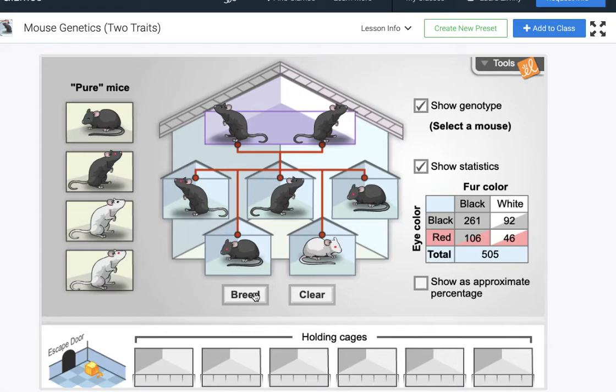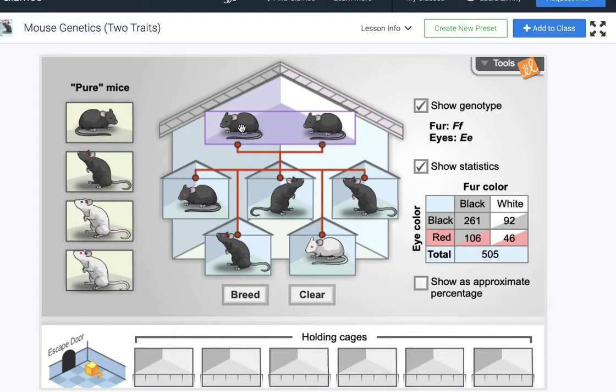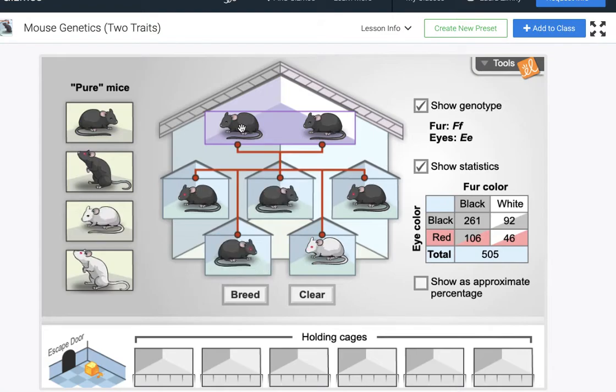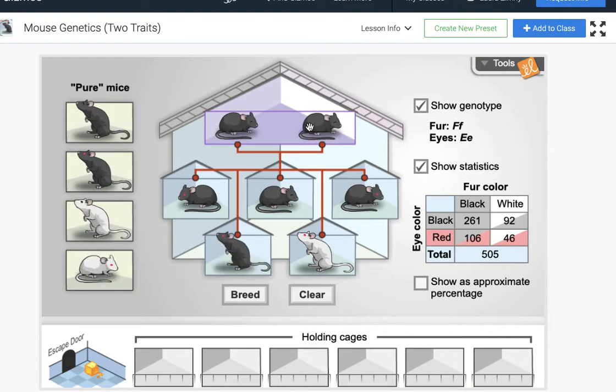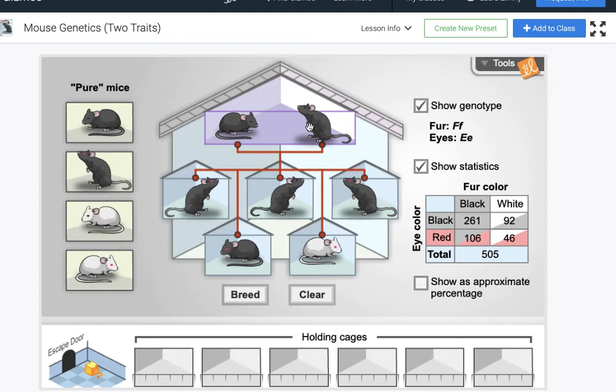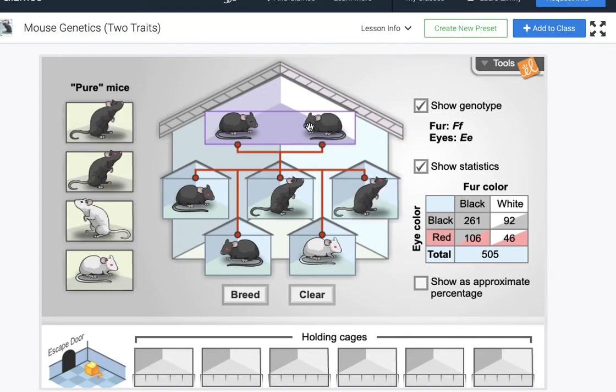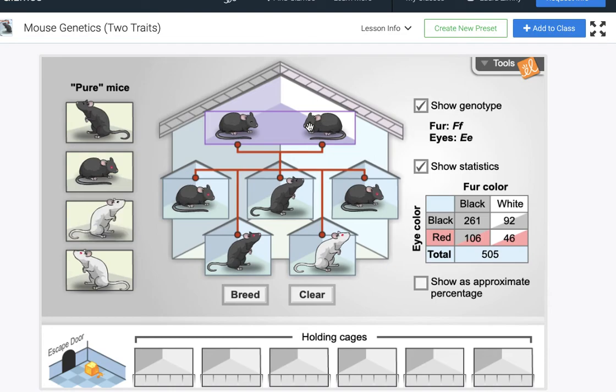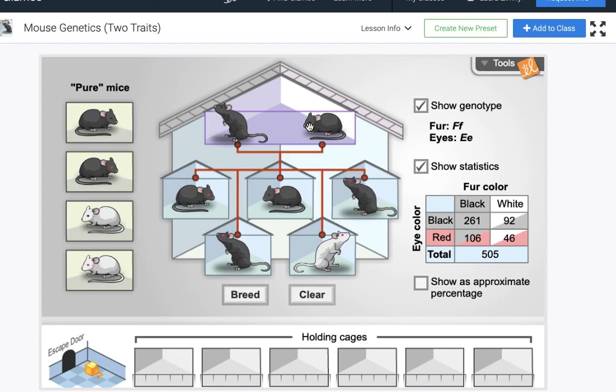All right I'm gonna breed them 505 times apparently, okay because this is a true dihybrid cross where we have both heterozygous genotypes for fur color and eye color in both we should be able to see a nine to three to three to one ratio. Again nine times out of every 16 that we do this we should see the dominant dominant phenotypes of black fur black eyes, three times we should see dominant black fur with the recessive red eye color, three additional times we should see the recessive white color with the dominant black eye color, and then one out of every 16 times we should see the recessive white color with the recessive red eye color.